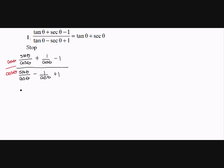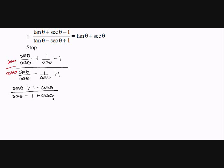So those two cosines cancel. I get sine theta plus — cosines cancel — giving me 1 minus cosine theta, all over sine theta minus 1 plus cosine theta.